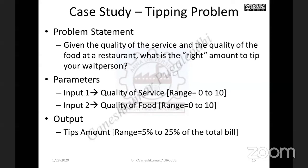In order to estimate how much amount a wait person can get from a customer, and to decide how much salary to give the wait person, we need an expert system for which the inputs are quality of service and quality of food. There are two input parameters: quality of service — how much quality the service was extended by the wait person — and quality of food served. With these two input parameters, what we have to decide is how much amount the customer tipped. Our objective is to find out the tips amount.